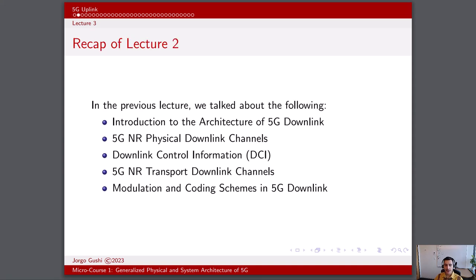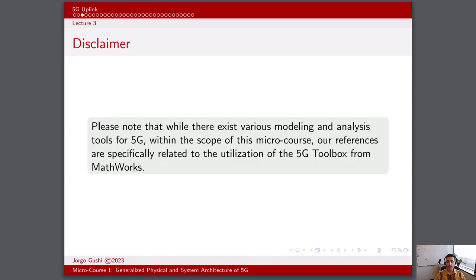In the previous lecture, we gave an introduction to the architecture of 5G downlink, talked about the 5G NR physical and transport channels, covered the downlink control information, and further discussed the modulation and coding schemes in 5G downlink. Please note that while there exist various modeling and analysis tools for 5G, within the scope of this microcores, our references are specifically related to the utilization of the 5G toolbox from MathWorks.